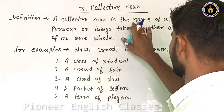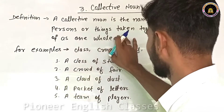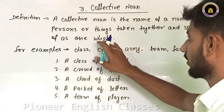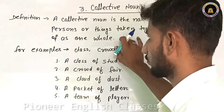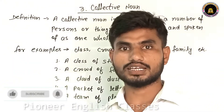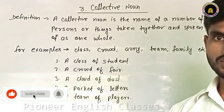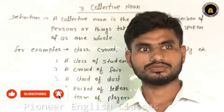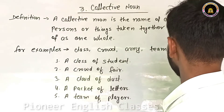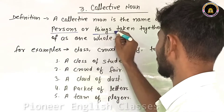A collective noun is the name of a number of persons or things taken together and spoken of as one voice. A collective noun is the name of a number of persons and things.